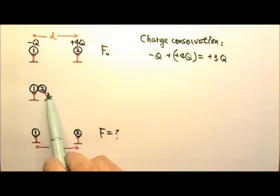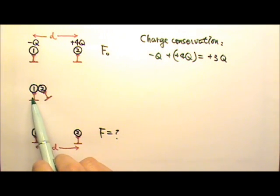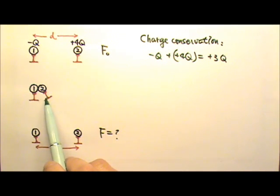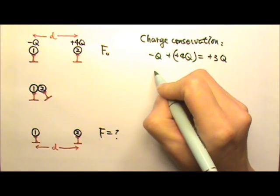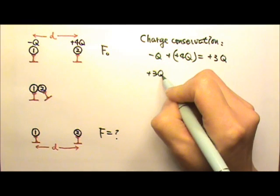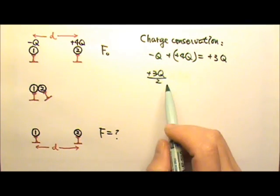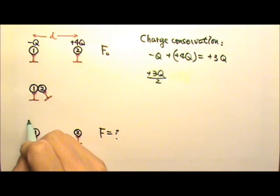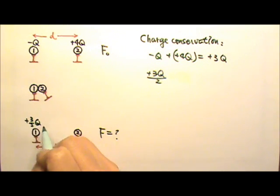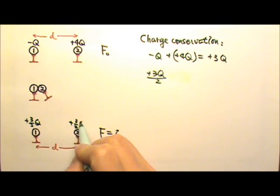Because the two spheres are identical, they would share the final charges evenly. So each sphere ends with positive 3q divided by 2. That's the amount of charge each sphere ends with: positive 3 halves q and positive 3 halves q.